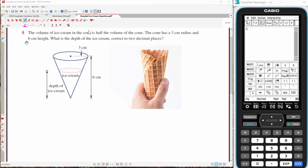It's a fantastic problem and it's a great one leading into year 12, year 11 methods. The volume of ice cream in the cone is half the volume of the cone. The cone has a 3cm radius, 6cm height. What is the depth of the ice cream correct to two decimal places?